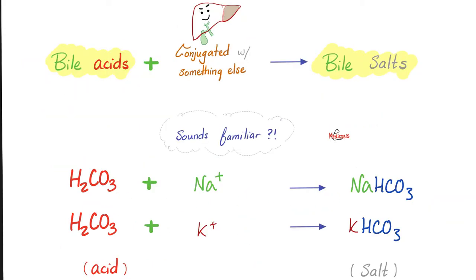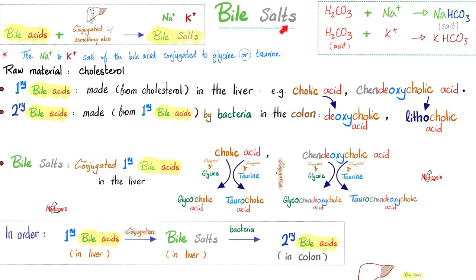Back to basic chemistry: here is an acid; here is an electrolyte — join them and you have a salt. Similarly, here are bile acids — conjugate them with something else and you get bile salts. In reality, we conjugate them with something else and add sodium or potassium. Bile salts are conjugated bile acids. We have two types of bile acids: primary and secondary. Which was made first? Primary bile acids — made by the liver from cholesterol.